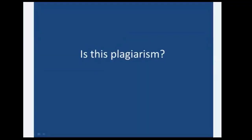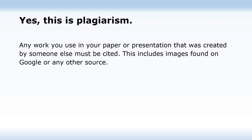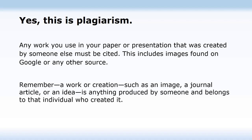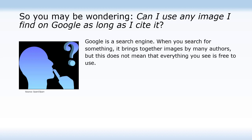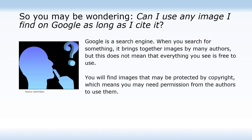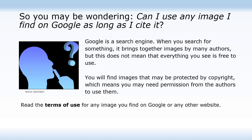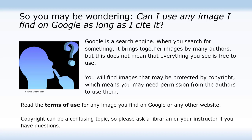Is this plagiarism? Yes, this is plagiarism. Any work you use in your paper or presentation that was created by someone else must be cited. This includes images found on Google or any other source. Remember, a work or creation — such as an image, a journal article, or an idea — belongs to the individual who created it. You may be wondering: can I use any image I find on Google as long as I cite it? Google is a search engine that brings together images by many authors, but this does not mean everything you see is free to use. You may find images protected by copyright, which means you may need permission from the authors to use them. Read the terms of use for any image you find, and ask a librarian or your instructor if you have questions about copyright.